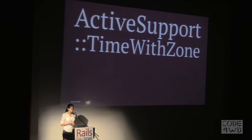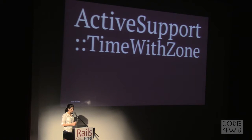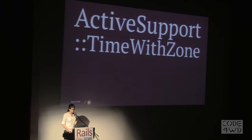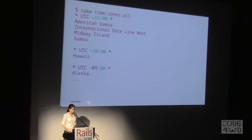In combination with ActiveSupport::TimeWithZone, it provides a nice DSL so that when you do Time.new in Rails, it actually goes through the time zones — you don't have to instantiate TimeWithZone in Rails. If you want to find out all the time zones that Rails supports, you can just run rake time:zones:all and it gives you all the ones you can work with.